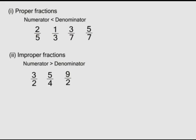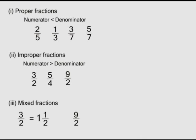An improper fraction can be expressed as a mixed fraction, having a whole number and a proper fraction. For instance, three over two can be written as one and one over two. Nine over two can be written as four and one over two. Thirteen over five can be written as two and three over five.